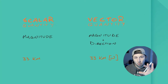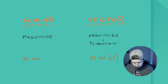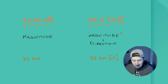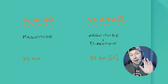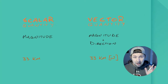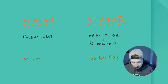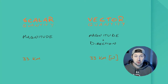A vector quantity has magnitude — how far you're going, in the case of distance — but it also has direction. So this one here is 33 kilometers west.